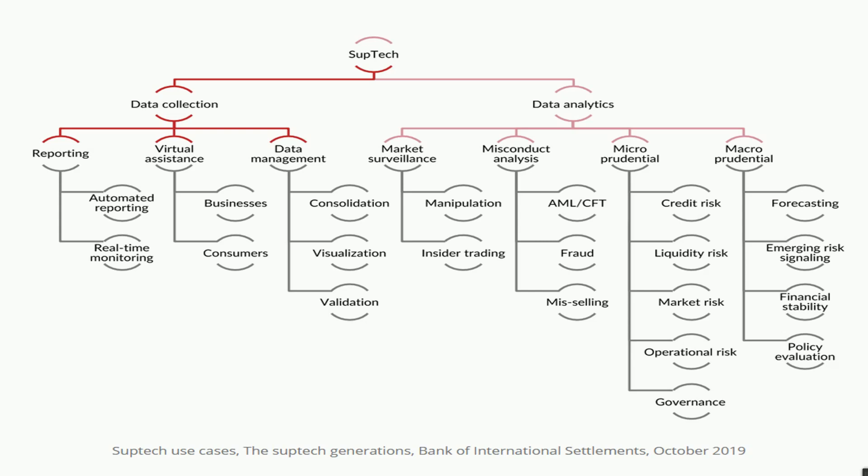Misconduct analysis covers AML and CFT — anti-money laundering and countering the financing of terrorism — checking whether these are being followed and flagging non-compliance. It also covers fraud and mis-selling, which is very important in financial services, where sales agents may mis-sell products to meet targets and earn commissions. Such instances can be identified through reporting numbers and customer grievance data — if mis-selling complaints are rising, regulators will act.